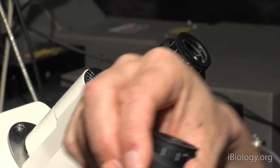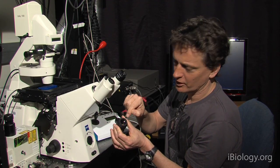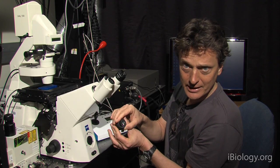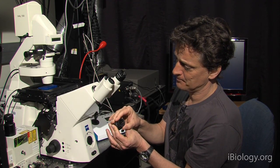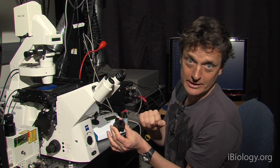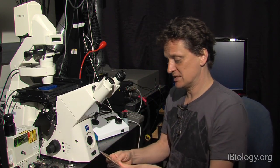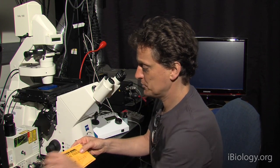First of all, what often happens is that dirt accumulates on the eyepiece. These are pretty clean in this case, but dirt will definitely make it harder to see things. So what you want to do is to clean them using an optical tissue.